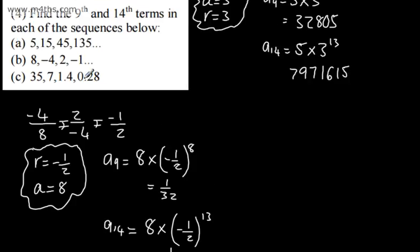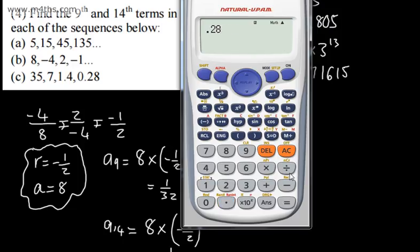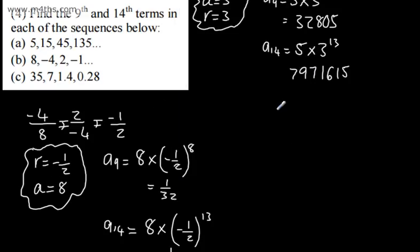Let's look at this one right here. We need the ratio. We should now have a consistent ratio. If we do 7 divided by 35, that's 0.2 or 1 fifth. 1.4 divided by 7 should give us 0.2 or 1 fifth. And 0.28 divided by 1.4 should again give us 1 fifth. So the ratio is 1 fifth — A is equal to 35, R is equal to 1 fifth or 0.2.